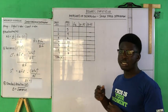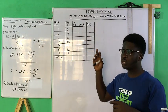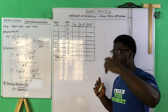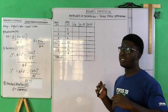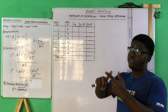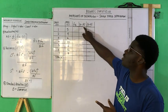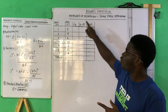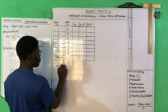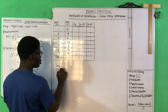Let's get down to the action. The steps for solving the mean deviation in your examination are: Step one — calculate your mean, because without the mean you cannot proceed. Step two — find the absolute difference between the mean and each of the x variables. Step three — multiply each frequency by its corresponding absolute difference.